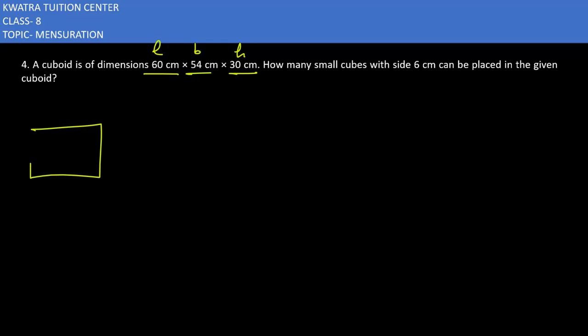Cuboid is for you and its dimensions are given: that is length, breadth and height. Height is given 30, breadth is given 54 and length is given 60 cm.